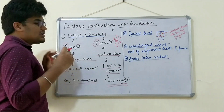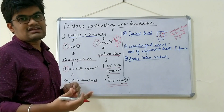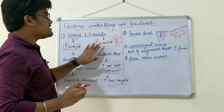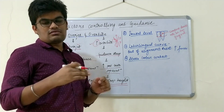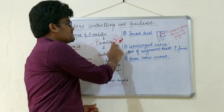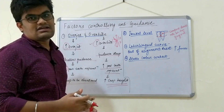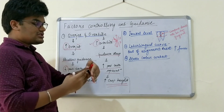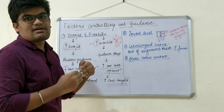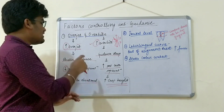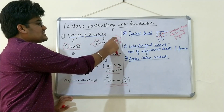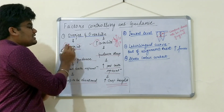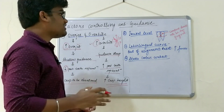In prosthetics, when harmonizing anterior guidance, we usually prefer increased overjet rather than increased overbite. Although increased overbite achieves greater posterior teeth separation, the axial forces on the anterior teeth are much larger in steeper overbite cases, because the force the mandibular incisor exerts on the maxillary incisor is much greater. These axial forces are harmful to the periodontium of the anterior teeth, hence increased overjet is preferred in prosthesis design.